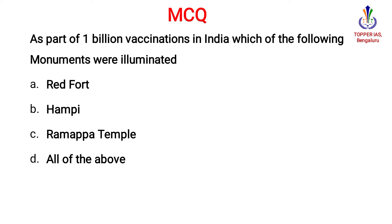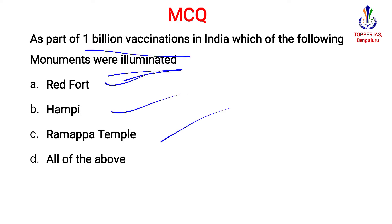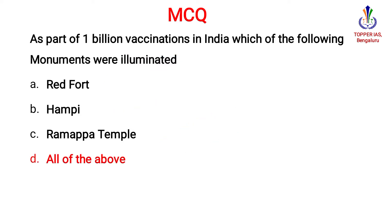One MCQ about this related to 1 billion vaccinations in India: which of the monuments were illuminated? The options are Red Fort, Hampi, and Ramappa Temple. The answer will be all of the above.